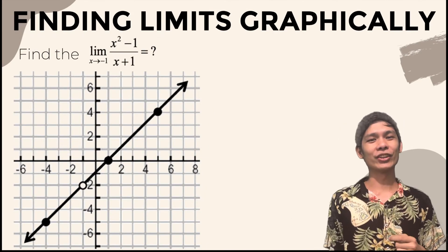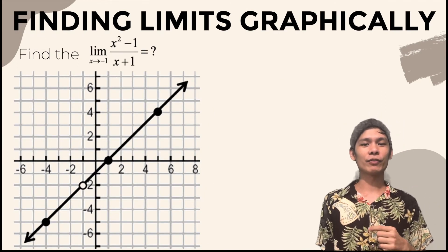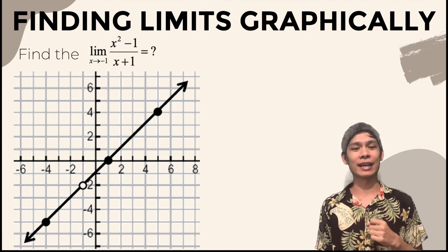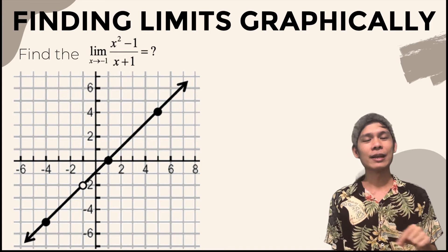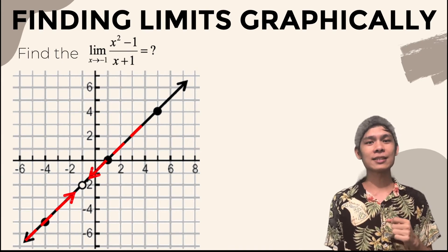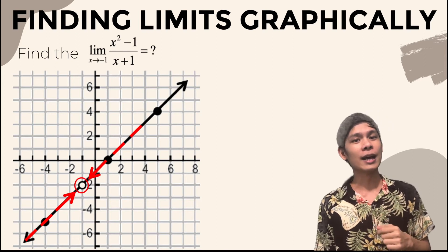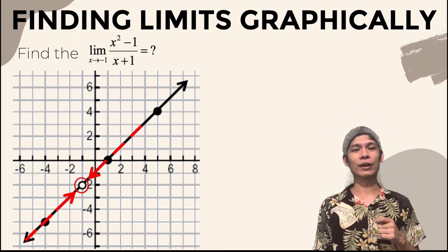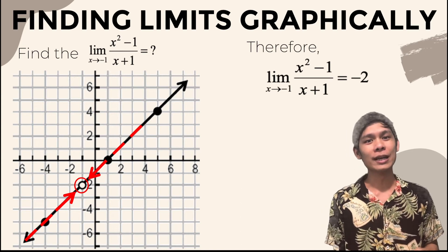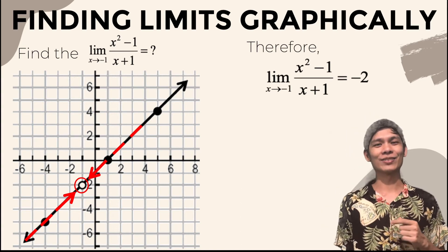Let's try again another example. Let's find the limit of the function x squared minus 1 over x plus 1 as x approaches negative 1. Analyze the given graph. Try using your fingers to trace along the graph from both sides where x is equal to negative 1. As you notice, both your fingers approach the height of negative 2. Therefore, we conclude that the limit of the function is negative 2.